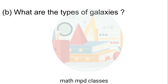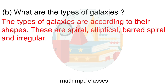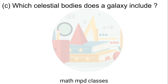B. What are the types of galaxies? Answer: The types of galaxies are classified according to their shapes. These are spiral, elliptical, barred spiral, and irregular.